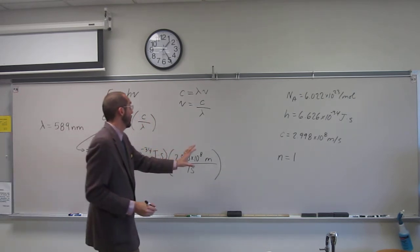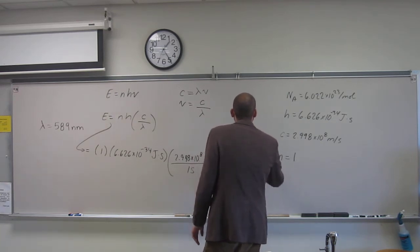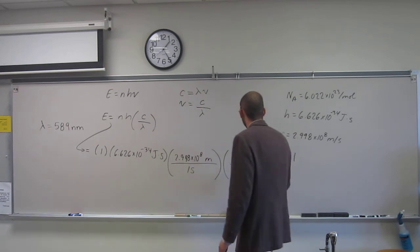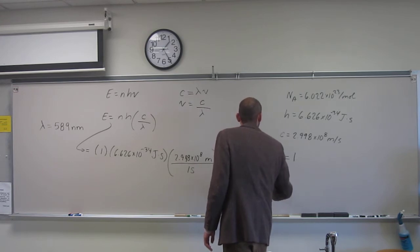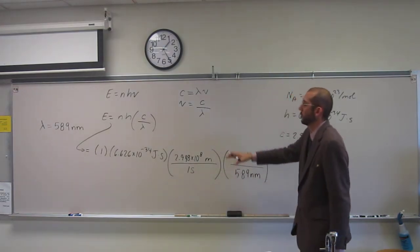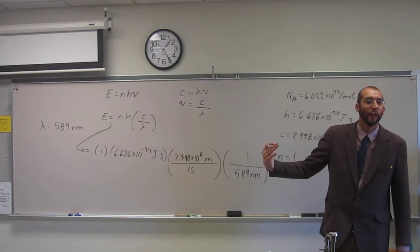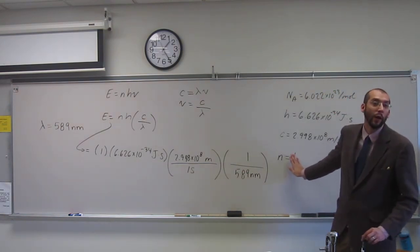If you have any trouble with this, we can fake this and do 1 over wavelength here. So the wavelength is 589 nanometers. I guess I should have converted at the beginning, but we're going to convert it to meters now. So everybody knows n is 1, I can erase that.